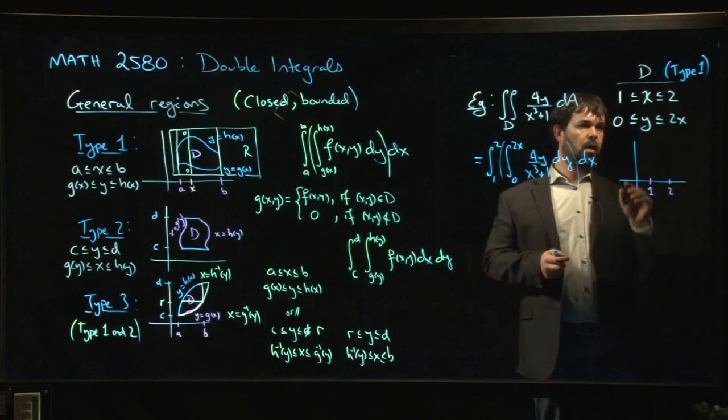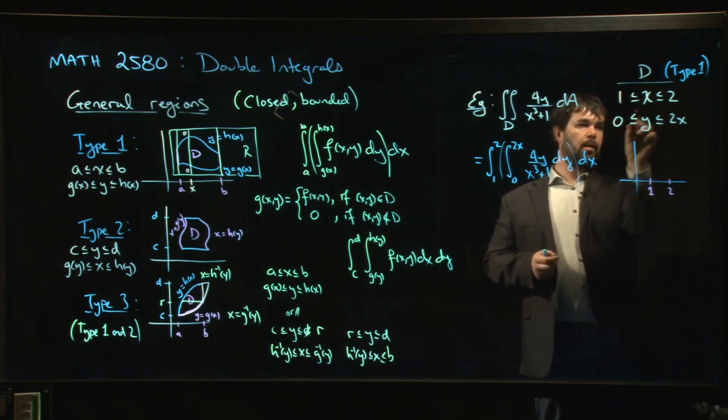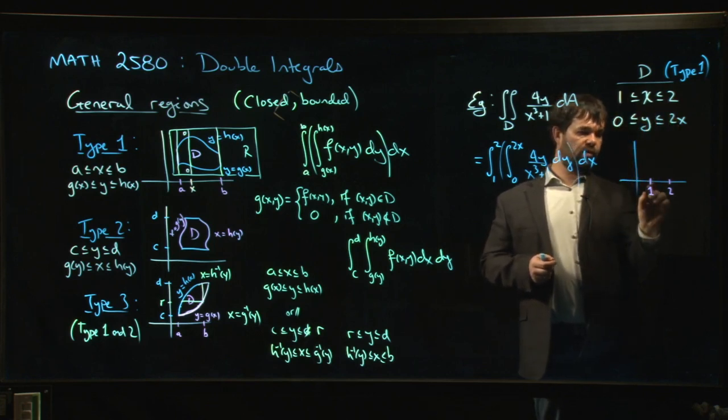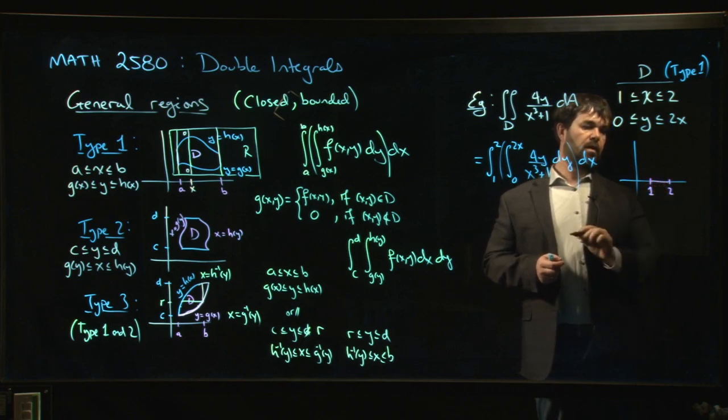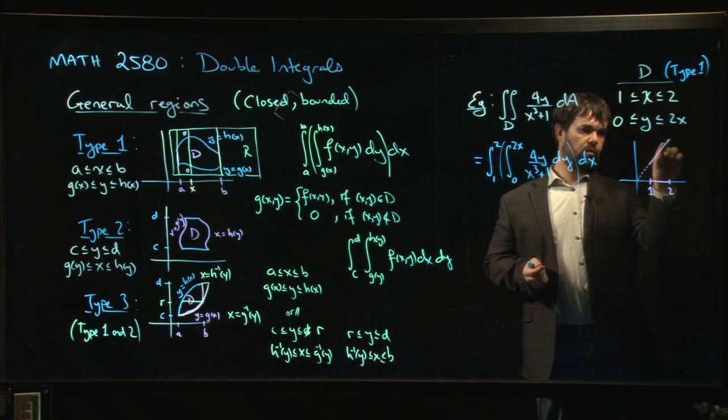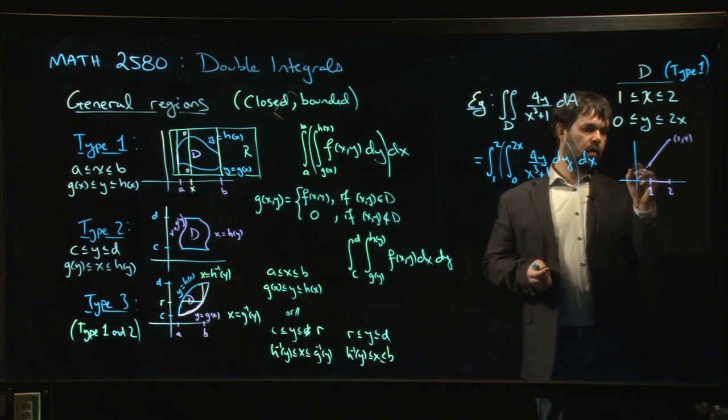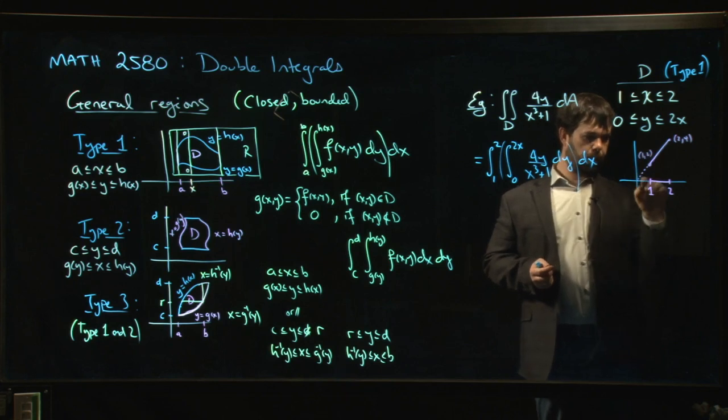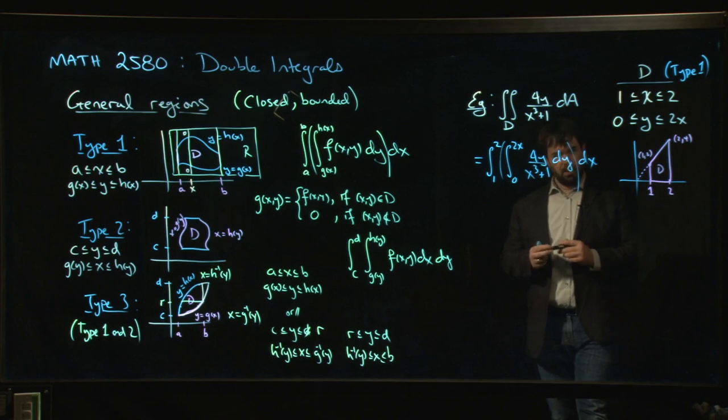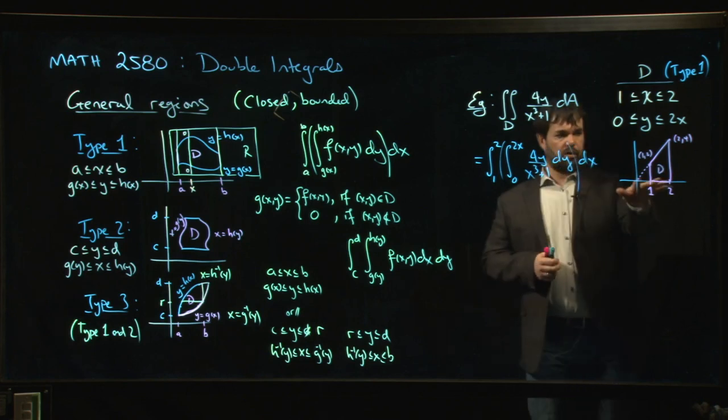So x=1, x=2, y=0—notice we're just putting in the bounds, the boundary points. x=1, x=2, y=0 is just the x-axis. And y=2x is a straight line with slope 2. This is going to be the point (2,4), that's the point (1,2), and you can see that you have this sort of trapezoid region.